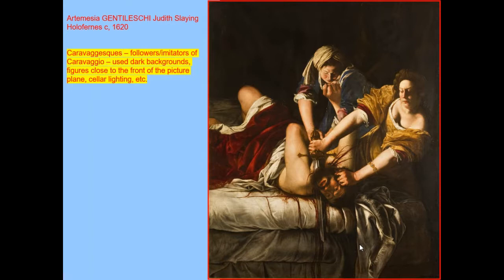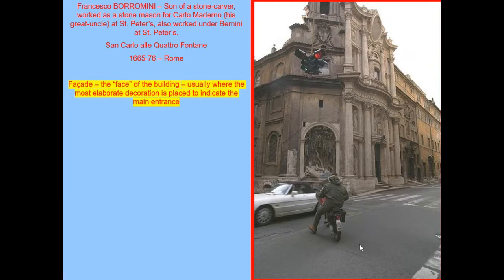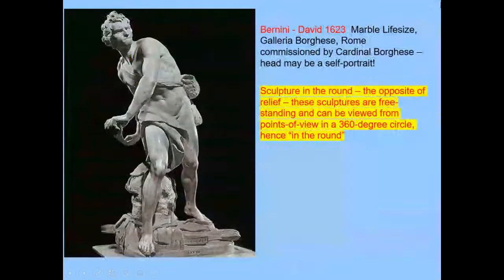We also see Counter-Reformation appeal in architecture. The church of San Carlo alle Quattro Fontane has a unique facade — one of the fountains is on the actual corner of the church, and the entrance is on an odd angle to the intersecting streets. The facade undulates, moving in and out in a curved fashion. It still has classical order details from the Renaissance but has far more organic elements — something unusual we haven't seen before.